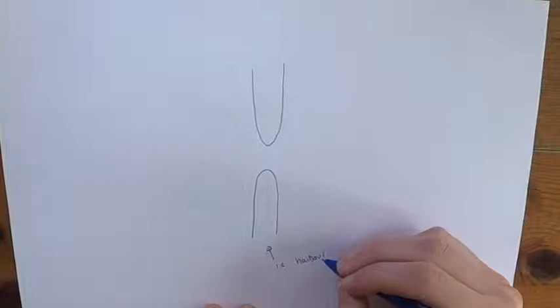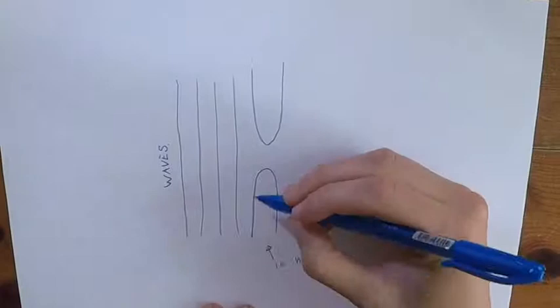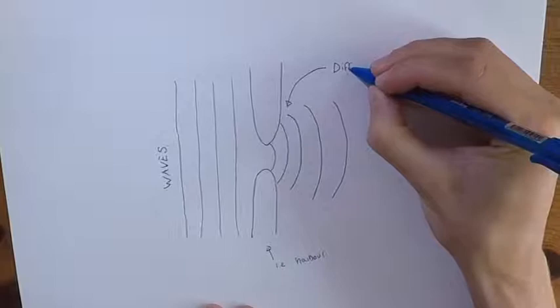Waves also diffract when passing obstacles such as a harbour or a jetty. As a wave hits an obstacle, the end of the wave is effectively separated but continues to propagate around the object as a circular wave originating from a point. This basically leads to a wave curling around the end of an obstruction.